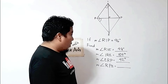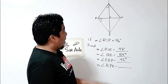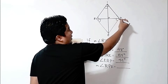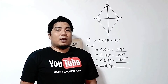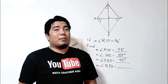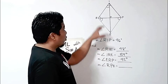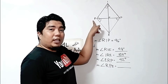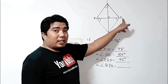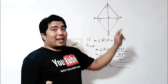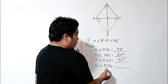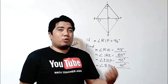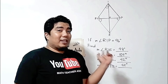For the last question, what is the measurement of angle RPE? One of the properties of a parallelogram is that opposite angles are congruent. So angle R and angle P are congruent. If angle R is 84 degrees, then angle P is 84 degrees. However, we are just getting half of it, so the answer for angle RPE is also 42 degrees. And we have answered all the questions in this given figure.